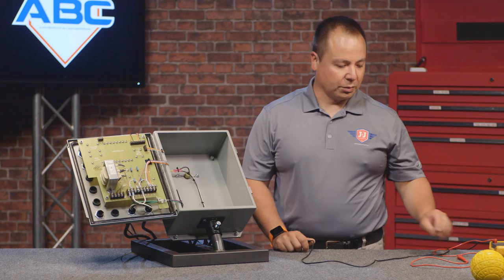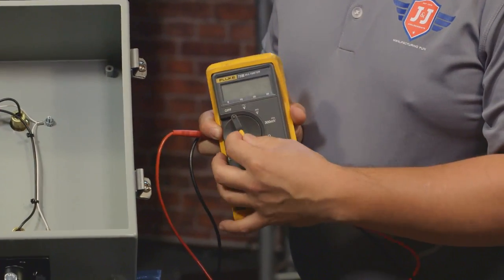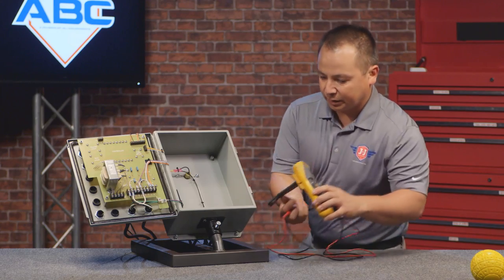So what we're going to do to test this relay is grab our multimeter and set it to voltage AC, which is the V with the little squiggly line, and we're going to set this up over here.